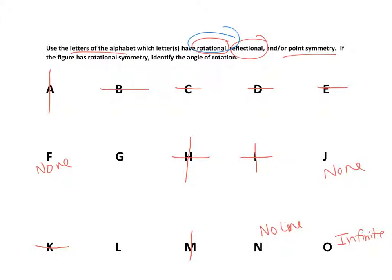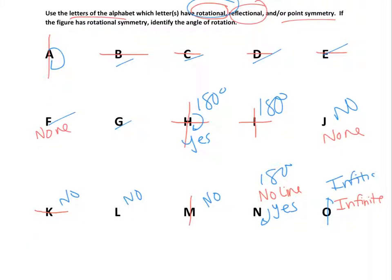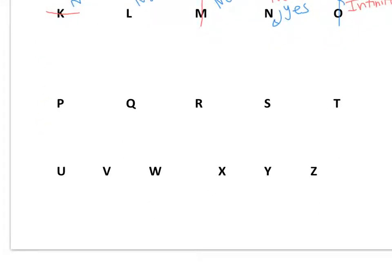For rotational symmetry among the letters: most have none. The letter S has point symmetry — 180 degree rotation. Same with Z. The letter N: if you rotate it 180 degrees it's the exact same thing, so it has point symmetry. The letter O has infinite rotational symmetry — no matter how many degrees you rotate it, it maps onto itself.